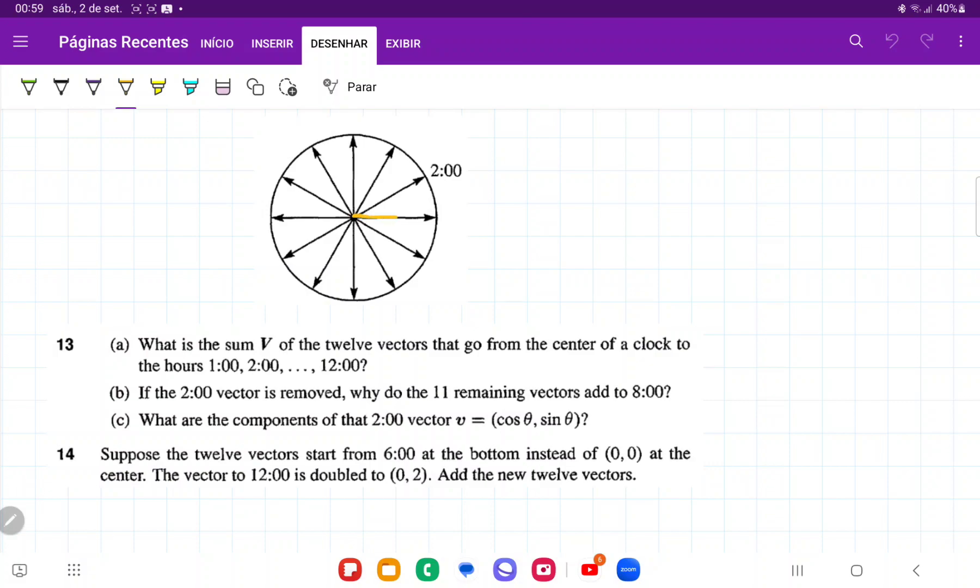Well, if we think about it, this vector cancels out with the other vector, right, because they're pulling in opposite directions. Same thing here. This vector is pulling 30 degrees upwards, and this other vector is pulling 30 degrees downwards.